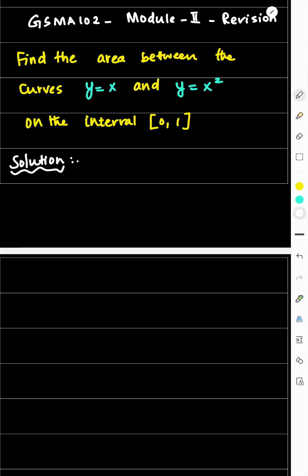Hi, welcome to Dr. Zakir Math. Find the area between the curves y equals x and y equals x square on the interval 0 comma 1.